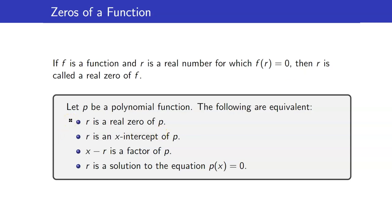Suppose that p is a polynomial function, then the following conditions are equivalent: r is a real zero of p; r is an x-intercept of p; x minus r is a factor of p; and r is a solution to the equation p(x) = 0. Basically, this is saying that zeros and x-intercepts are the same, and if we already know a zero of f, then we already know one factor of p. Because if r is a real zero, it automatically means that x minus r is a factor of p.